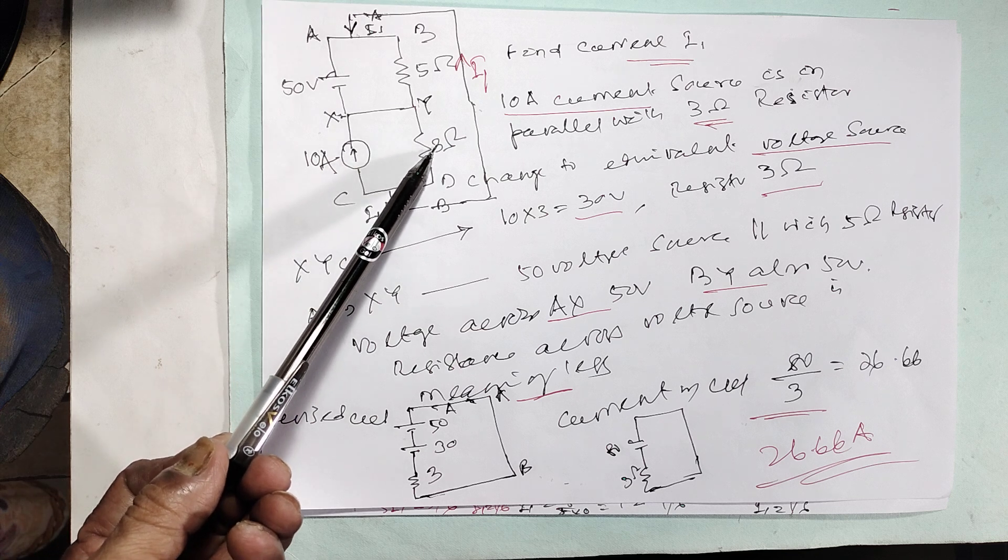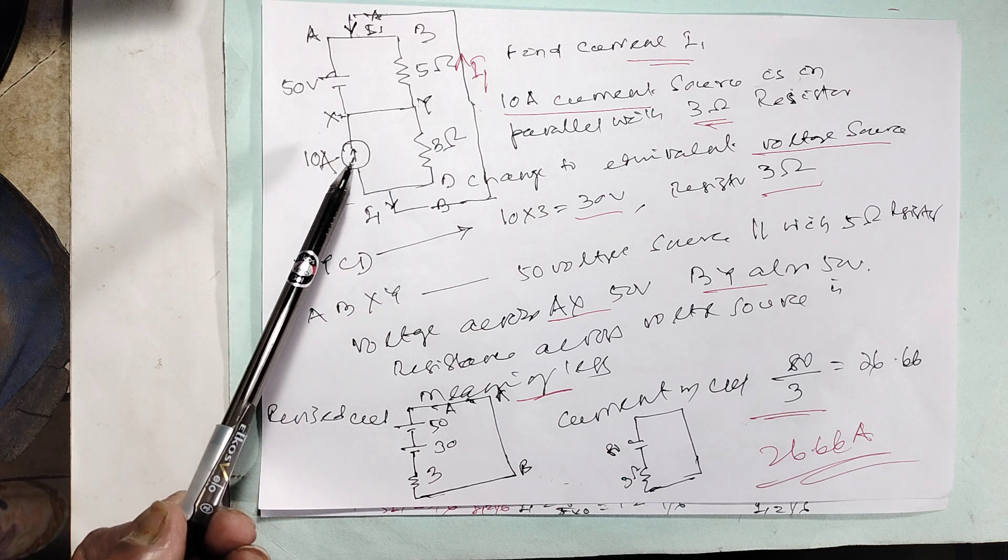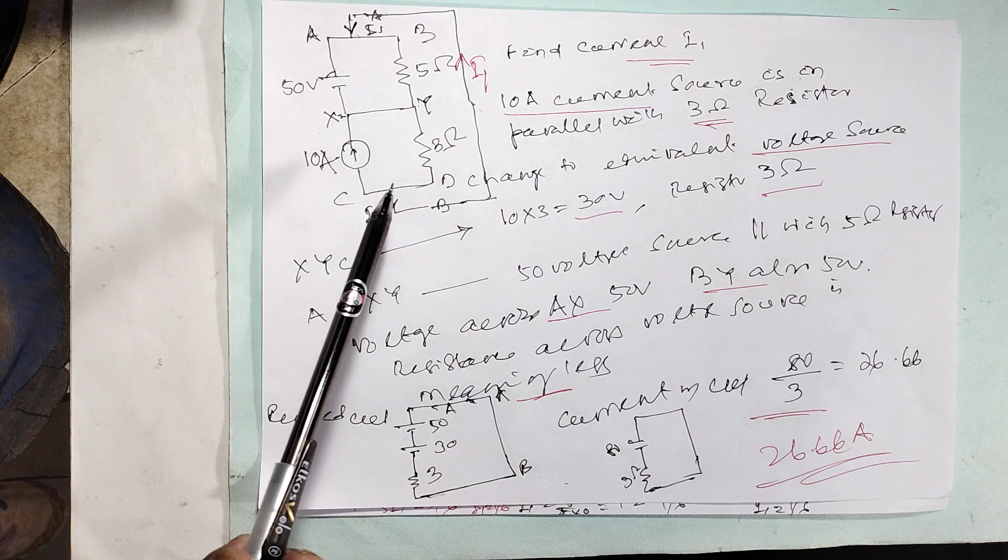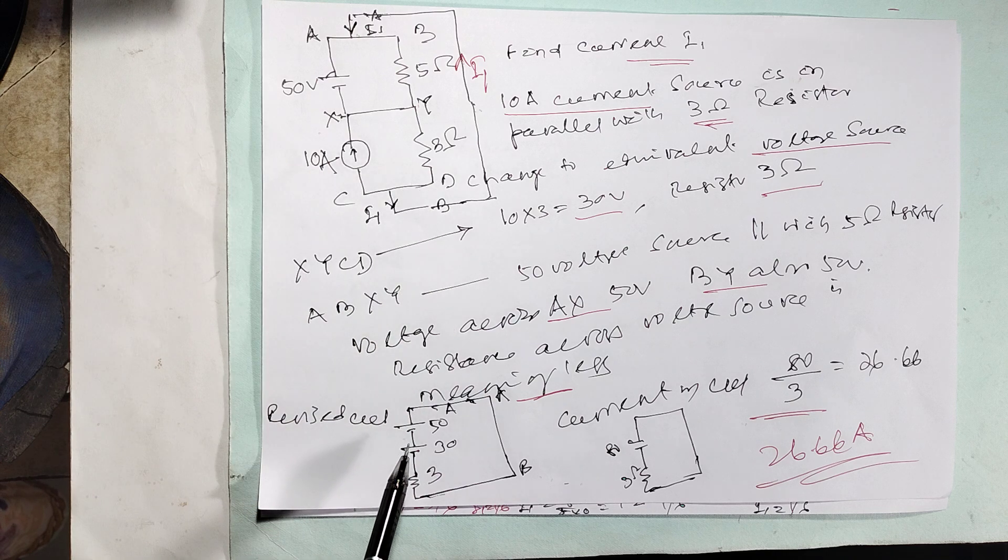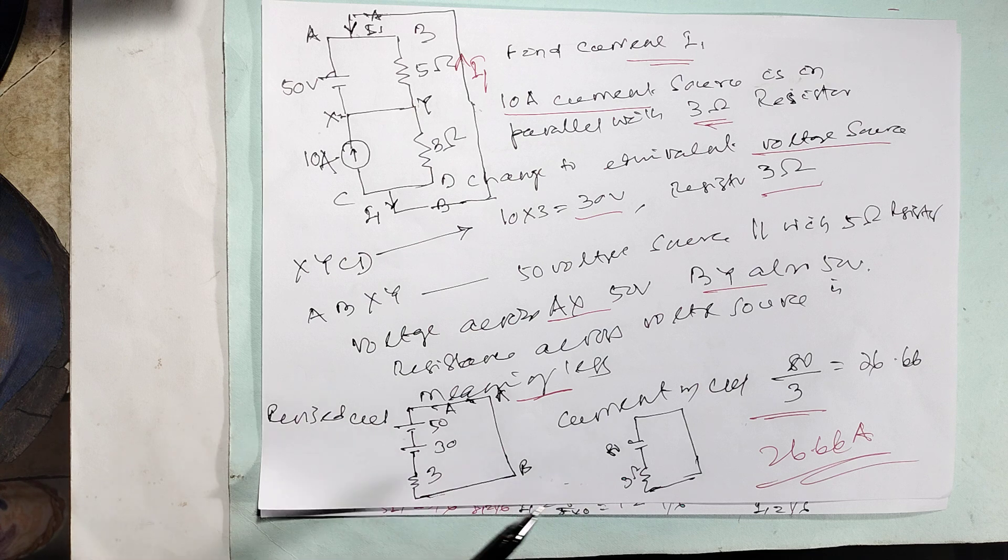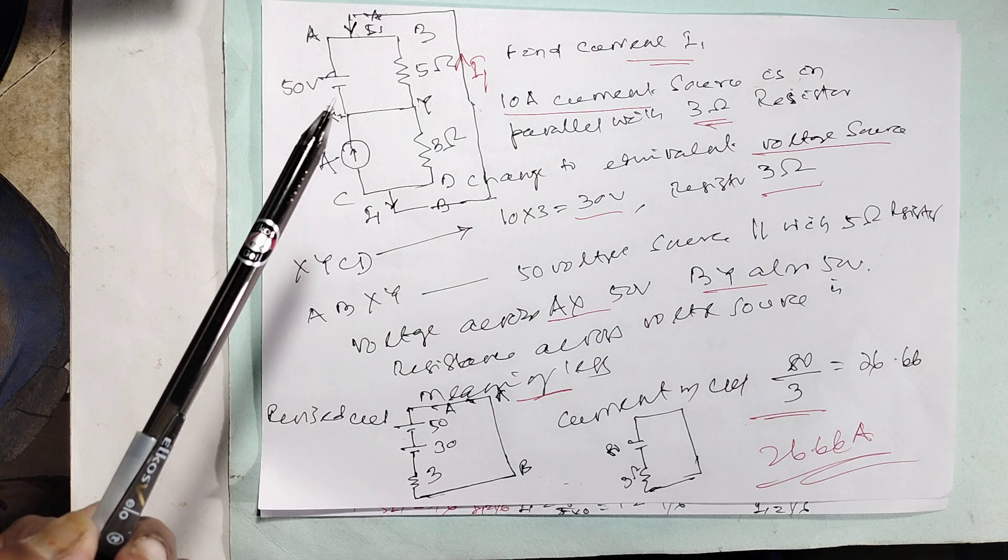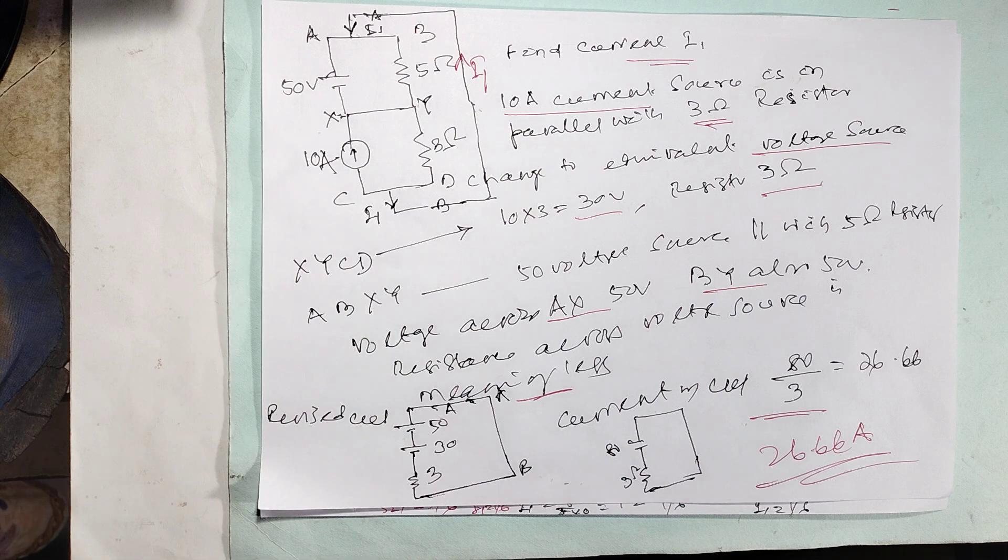10 ampere, 3 ohm - change to voltage source: 30 volts. Convert to voltage, 30 volts and 3 ohm resistor. So the ultimate DC circuit is coming like this: 80 volts in series with 3 ohms. So current you know, that's very easy: 80 by 3, 26.6 ampere. Completed.